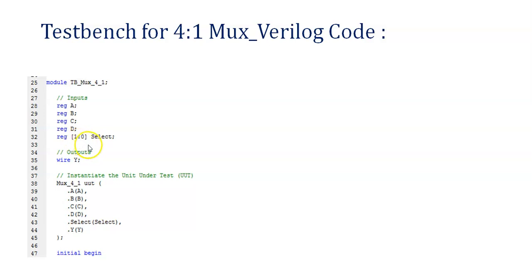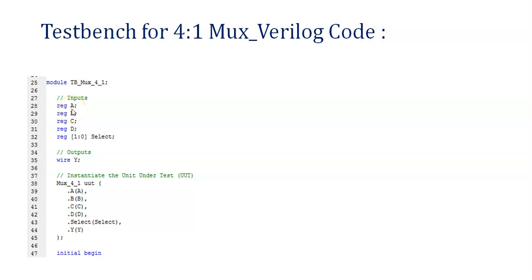You need to define inputs and outputs. Whatever inputs you have defined in the design as wire, you need to define them as REG (register data type) in the test bench. So A, B, C, D — by default they are wire — but you need to define them as REG, which has the ability to hold data, like a memory. Similarly, select[0] and select[1] are defined as REG. Now Y is your output, and outputs are defined as wire in the test bench. So: REG for inputs, wire for outputs — this you need to remember.